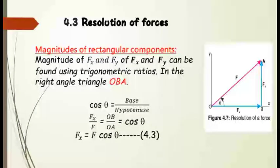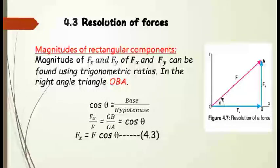Now we derive the equation to find the magnitude of rectangular components. The bold letters of fx and fy show that the force has both magnitude and direction, because force is a vector quantity. To find the magnitudes, we use trigonometric ratios. Cos theta equals base over hypotenuse — here base is OB and hypotenuse is OA.